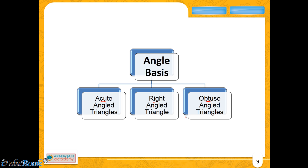Before we get into what each one of them means, let's look at what a right angle is. A right angle is an angle of 90 degrees. An acute angle is something which is less than 90 degrees, whereas an obtuse angle is something which is greater than 90 degrees. So the classification comes from 90 degrees: if you are 90 you are right, if you are less than 90 you are acute, and if you are greater than 90 you are an obtuse angle — and that defines what an acute angled, right angled, or obtuse angled triangle is.